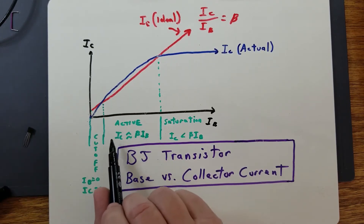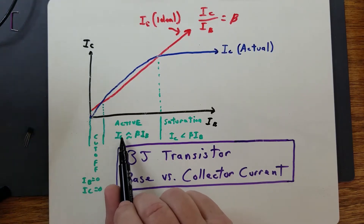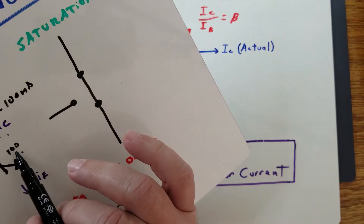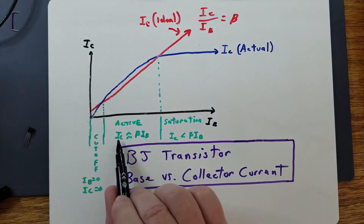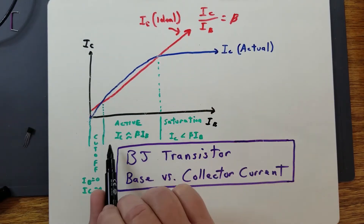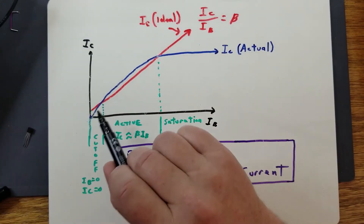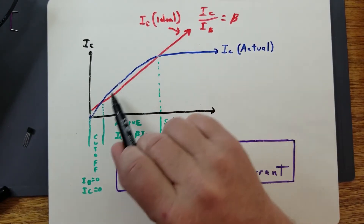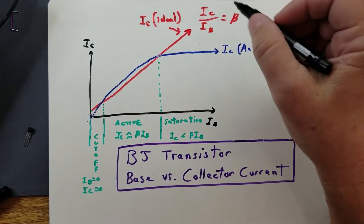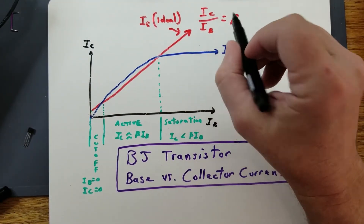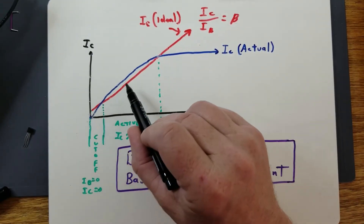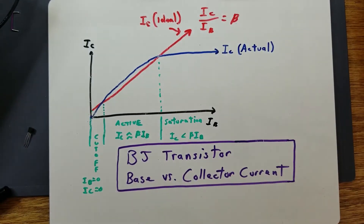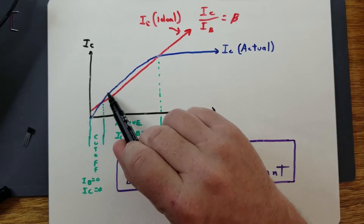As you increase your base current, you enter the active region, where your collector current Ic equals beta times Ib — your gain times your base current. The red line represents the ideal response of the transistor, where beta equals Ic divided by Ib, which is the slope of that line. The actual transistor response roughly follows this ideal response through the active region.